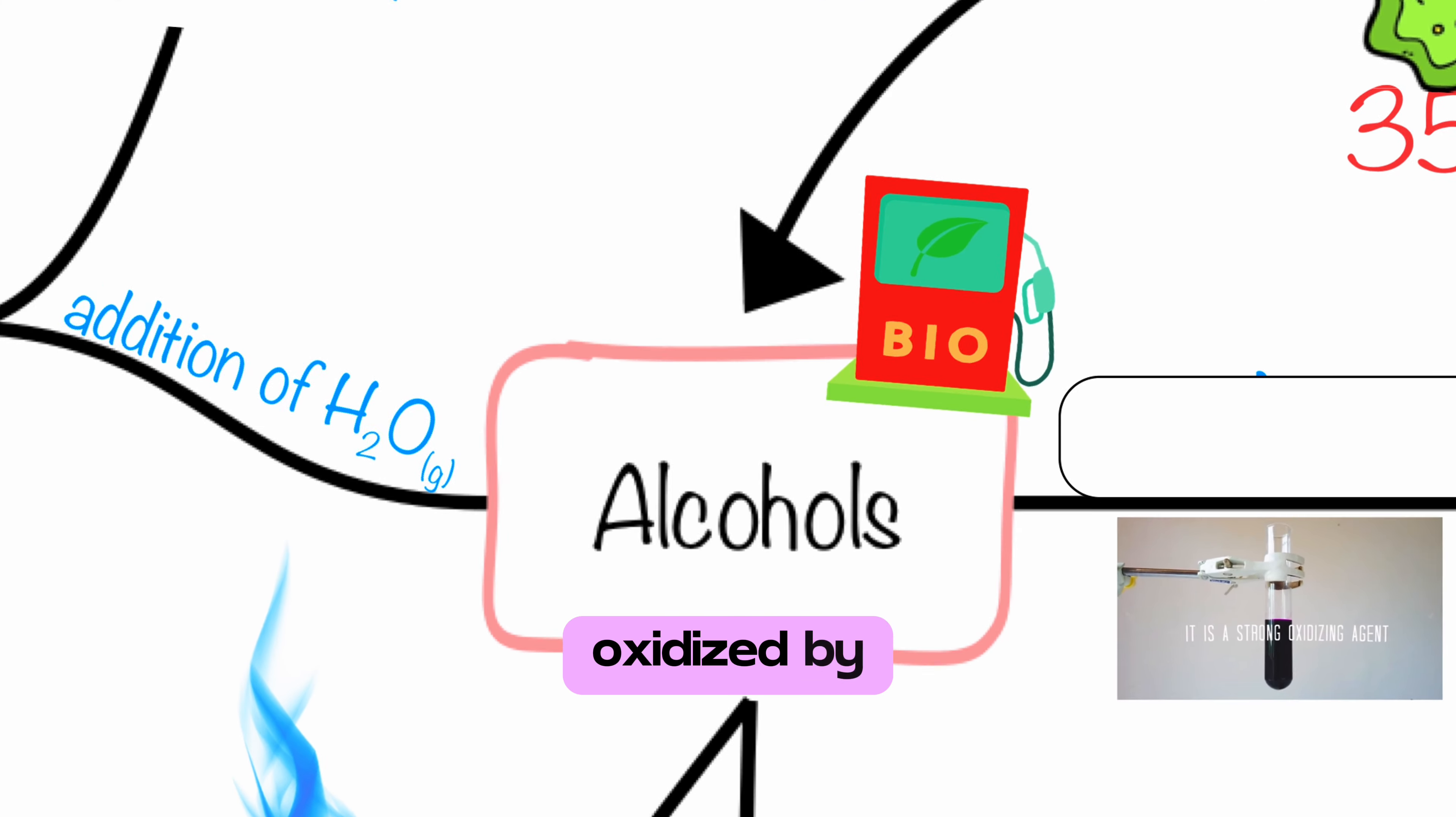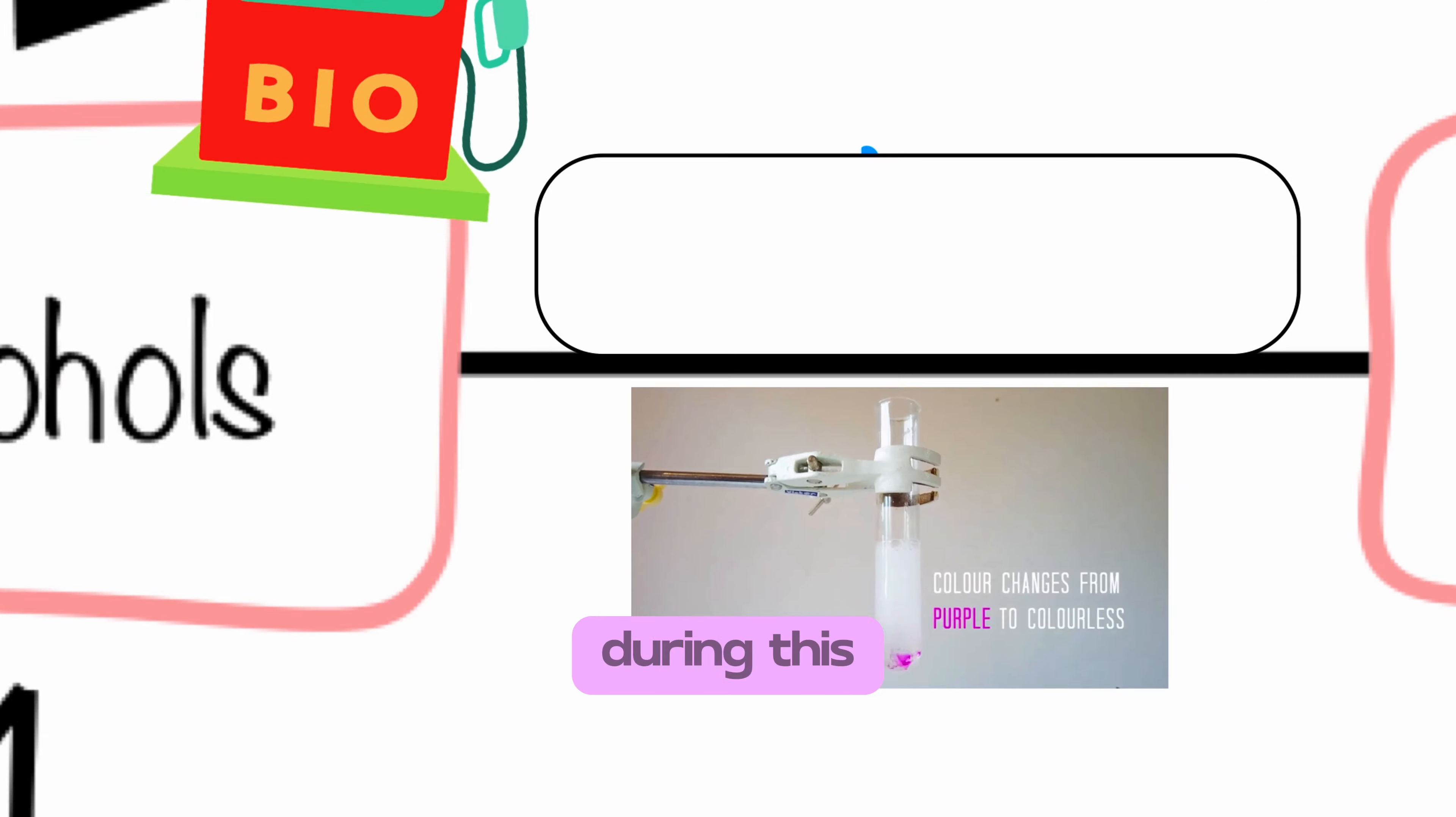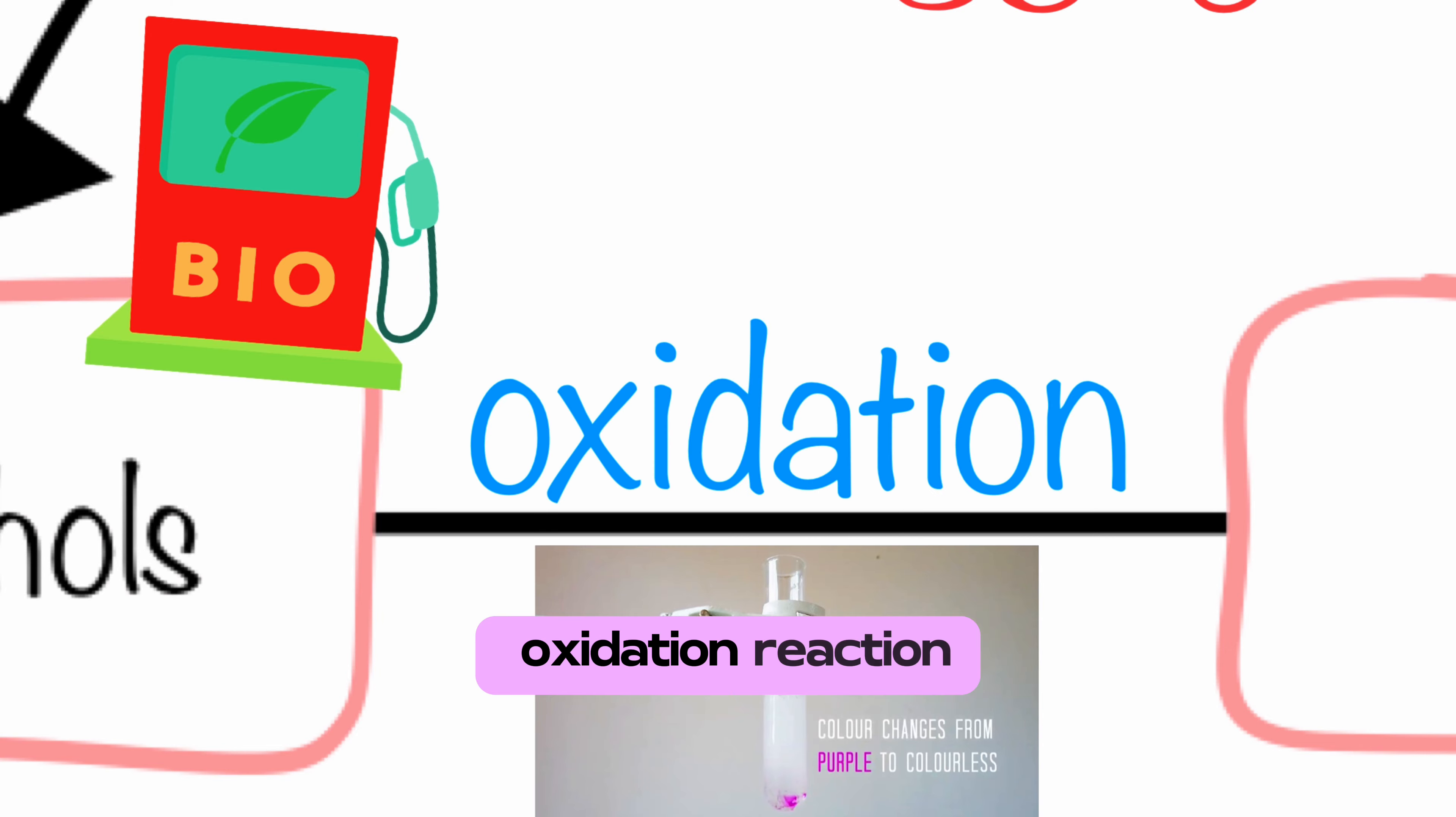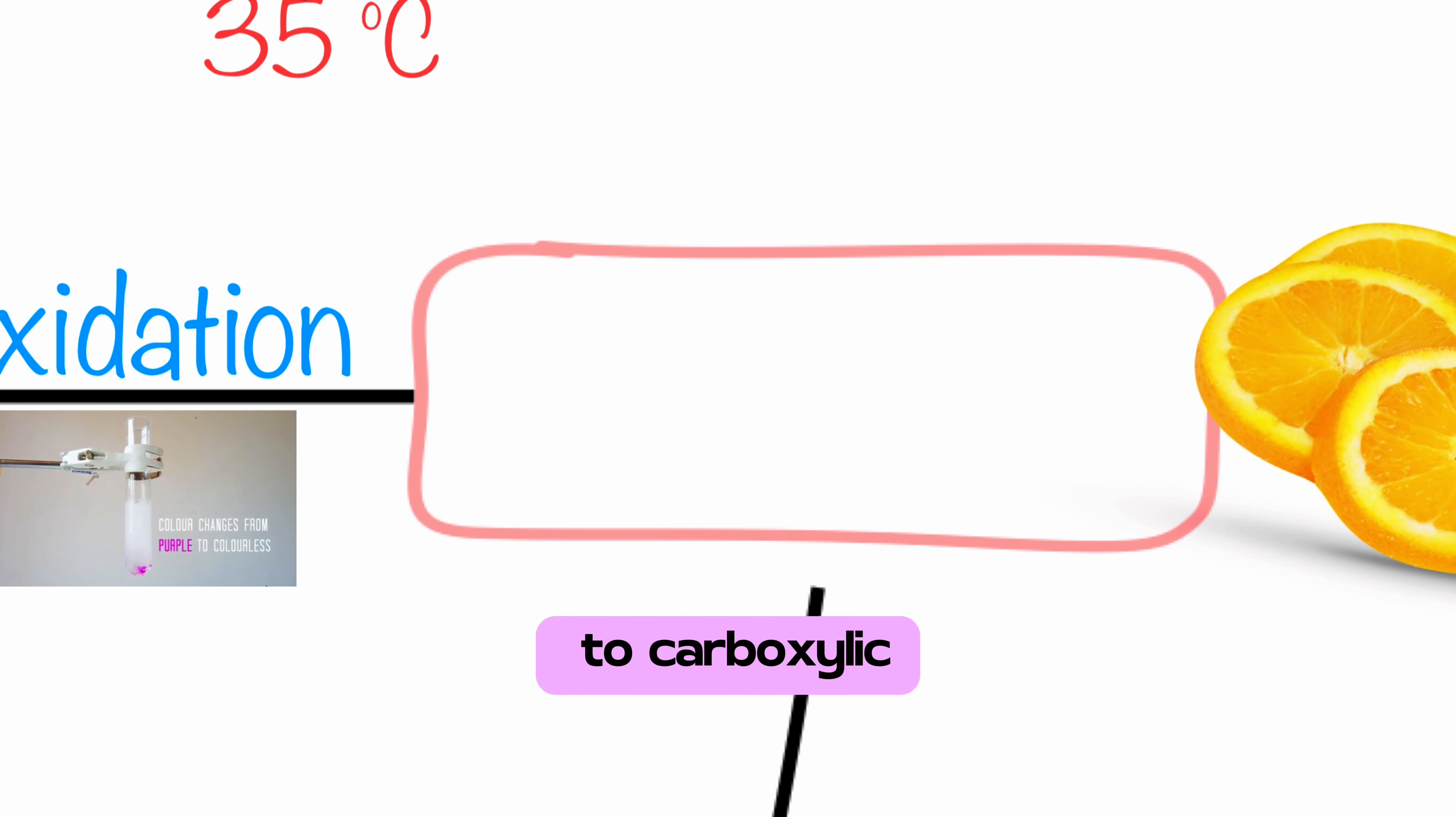Alcohols can be oxidized by means of potassium manganate. During this oxidation reaction, alcohols will be converted to carboxylic acids.